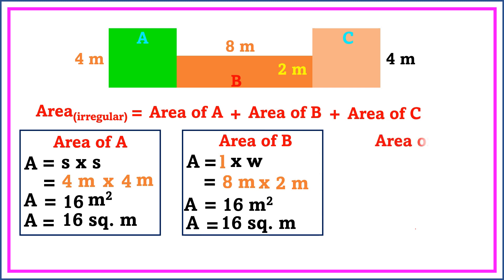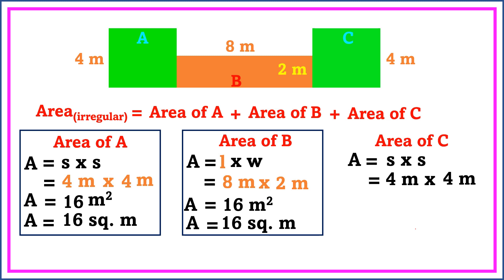Next, we're going to find the area of figure C. Figure C is in the shape of a square. Area is equal to side times side. The side of this square is 4 meters. 4 meters times 4 meters is equal to 16 square meters.